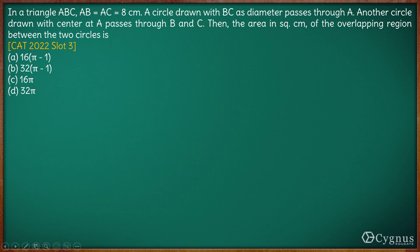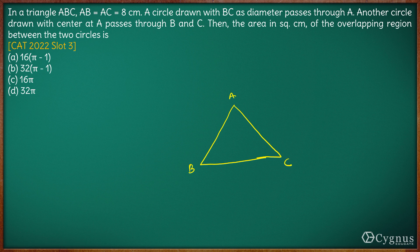Coming to this question, we have a triangle ABC where AB is equal to AC which is equal to 8. With BC as diameter, a circle is drawn which passes through A. So with BC as diameter we draw a circle, and the circle is such that it passes through A.